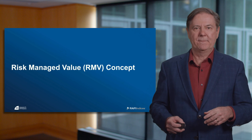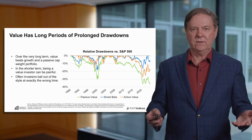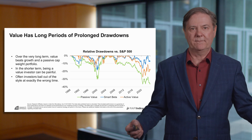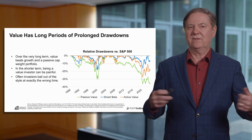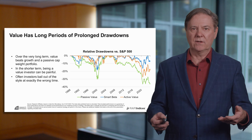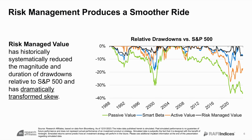Let me give an application before I go through the mechanics, and this is value. Value is very impressive over the very long term — it beats growth, it beats cap weight over the long term, but it's subject to these long periods of underperformance. Think of the green as the Russell value index. Now I'm going to add the risk-managed value in black. You can see that it's a much smoother ride — the drawdowns are substantially reduced.